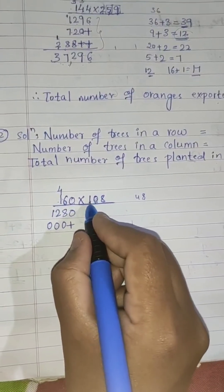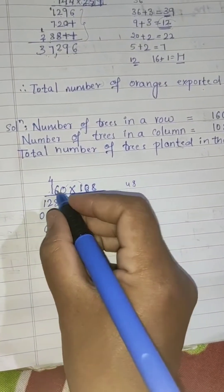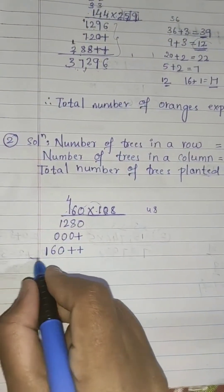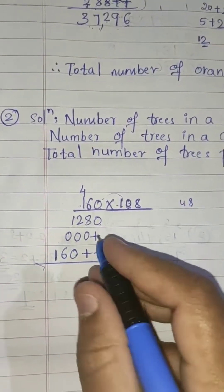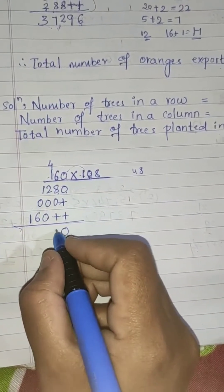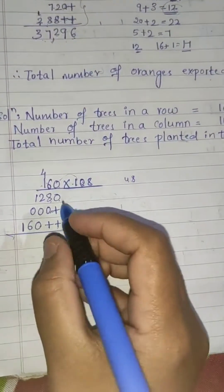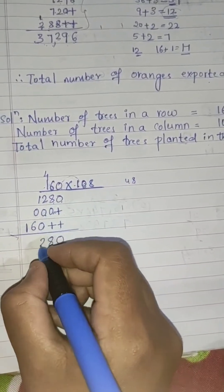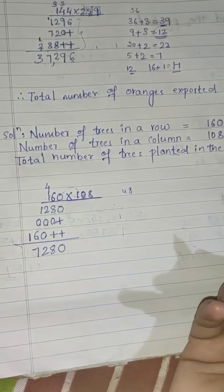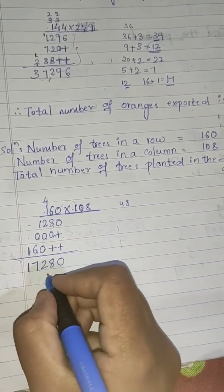Now the hundreds digit is 1, starting from the hundreds place: 1 zero is 0, 1 six is 6, 1 one is 1. No more digits to multiply, so add all the partial products: 0; 8 plus 0 is 8; 8 plus 0 is 8; 2 plus 0 is 2; 1 plus 0 is 1; then 1 plus 6 is 7. The answer is 17,280.